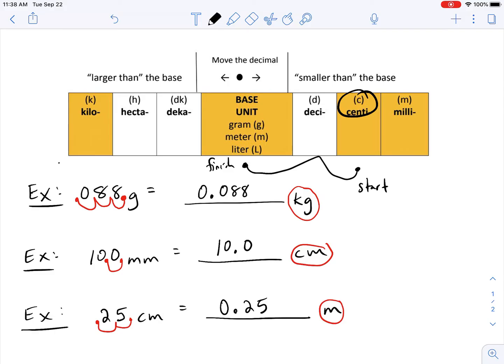And there are times where you're going to have to move it to the right. Unfortunately, all my examples here showed it going to the left. But you're going to use the same principle, where you're going to just find the prefix that you're given or where you start and then find where you finish and then move the decimal, however many spots to the right or to the left.